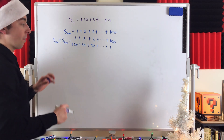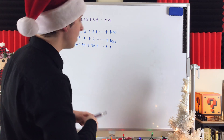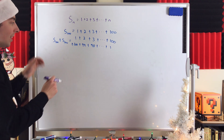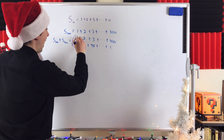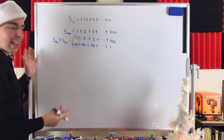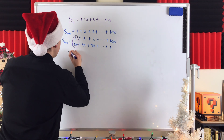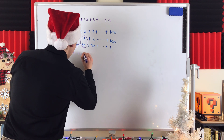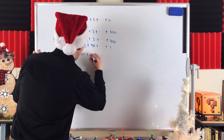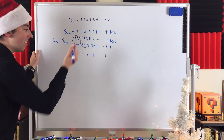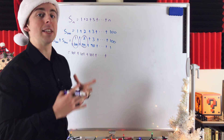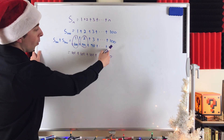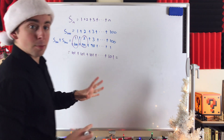Let's start adding these terms up. Instead of going 1 plus 2 plus 3 up to 100 plus 100 plus 99 down to 1, let's add a number from the first S100 to a number from the second S100. What's this first sum? 1 plus 100 is 101. What about the next pair? 99 plus 2 — that's 101. Next pair: 98 plus 3 — that's also 101. And you can see every pair of numbers from the two copies of the sum is going to be 101, all the way down to the last two: 100 plus 1 is 101.